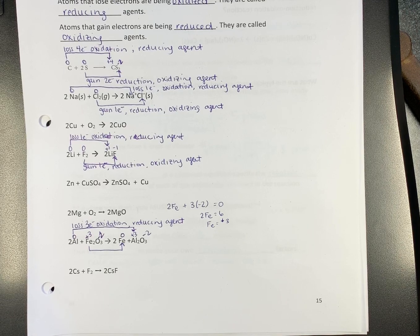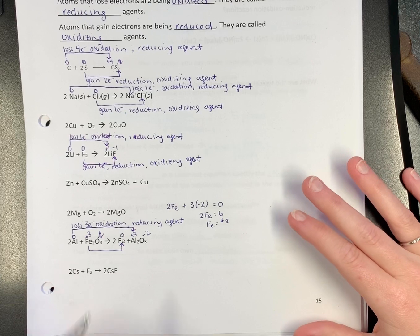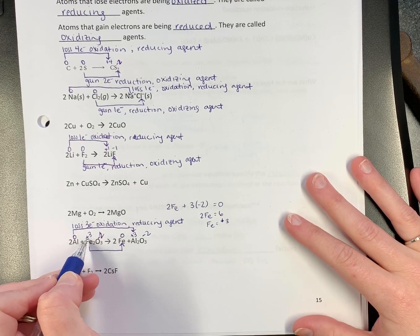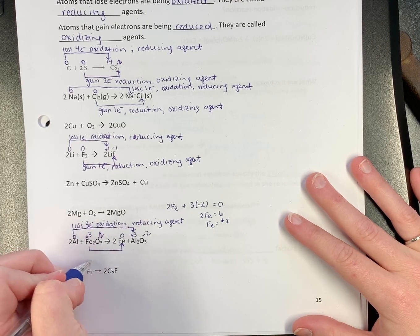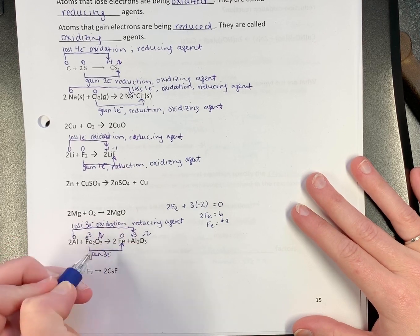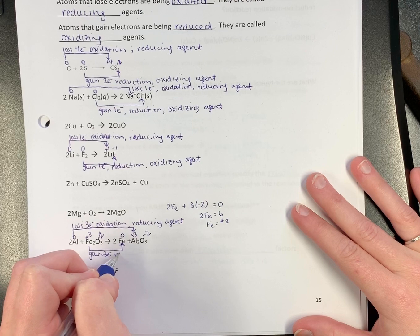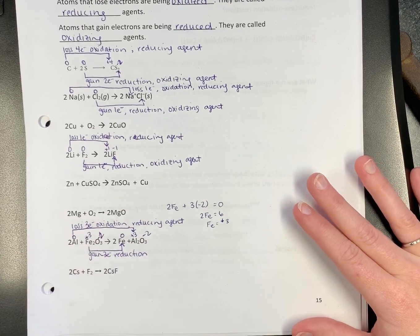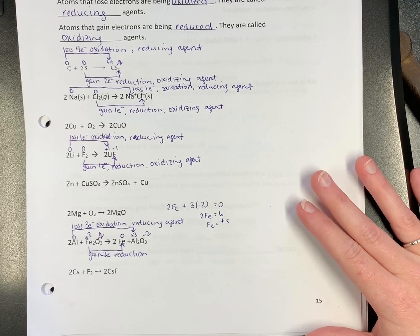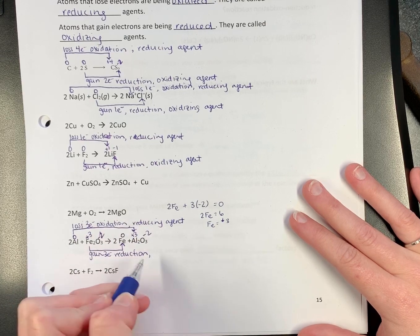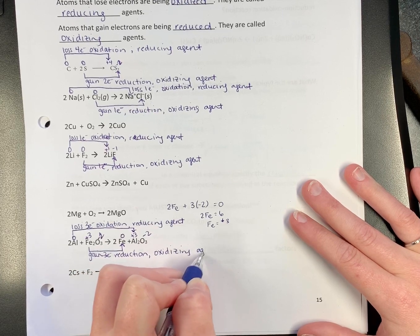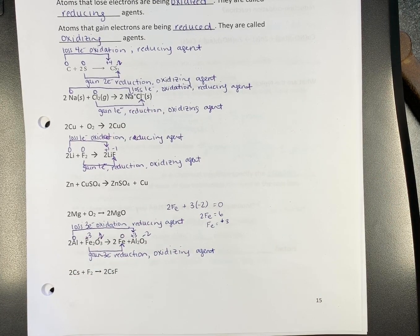If you work in the same way, you're less likely to make errors. So iron goes from positive three to zero. Gain or loss? Gain. Gain means it's reduction. If you're someone that says going from three to zero is a reduction in oxidation number, good for you. I'm not. If it's reduction, we call it the oxidizing agent.